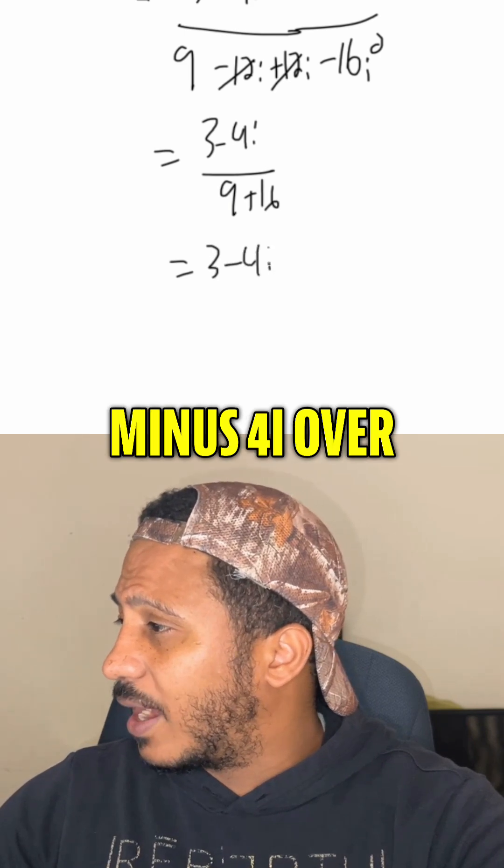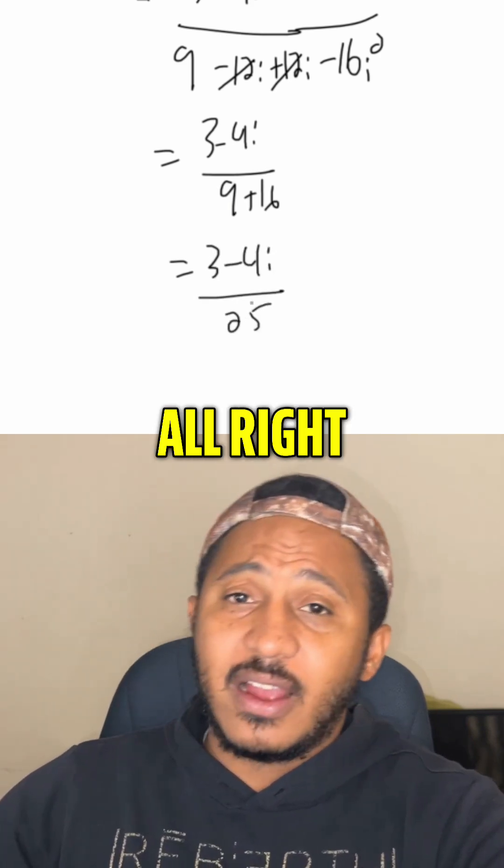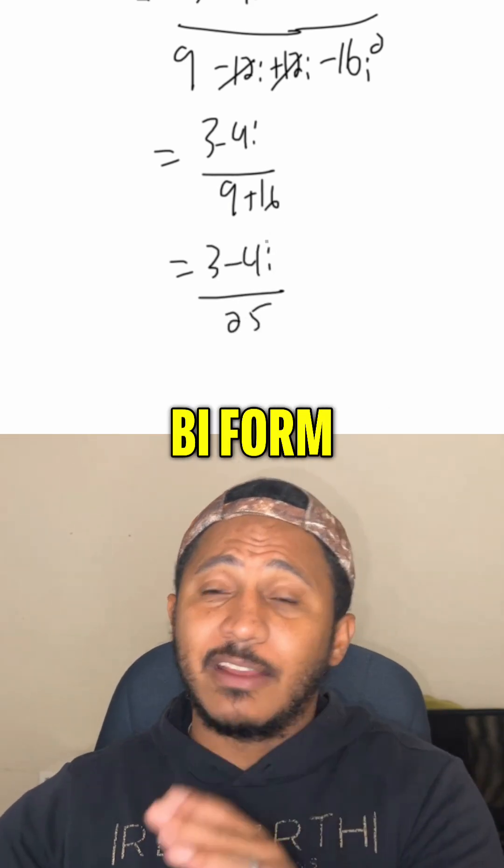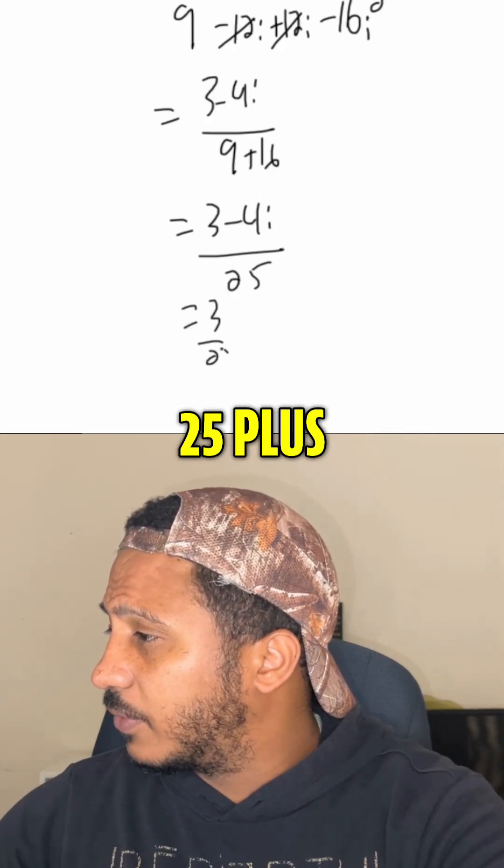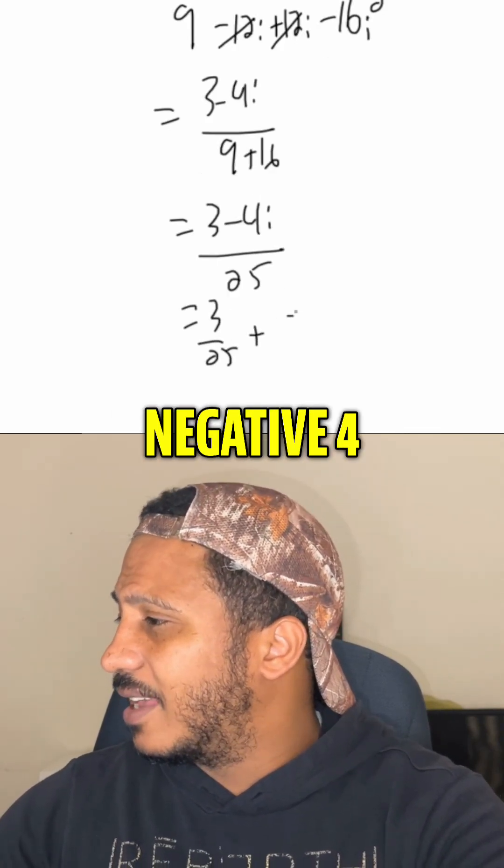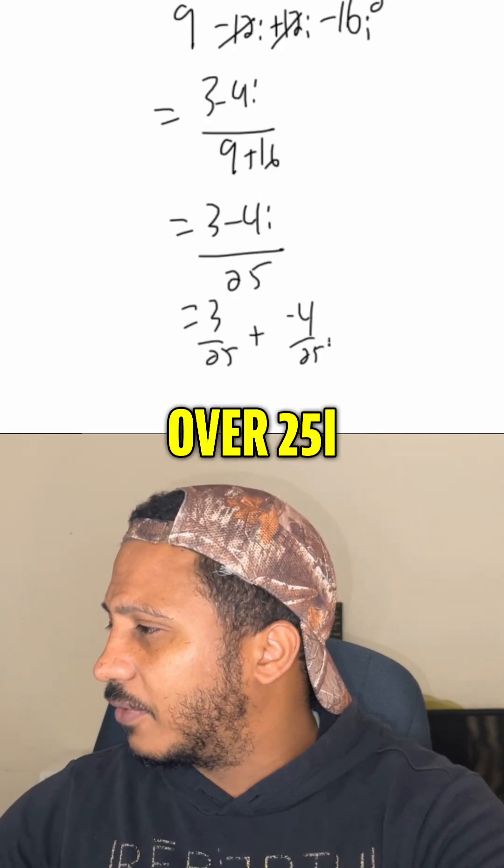So we get 3 minus 4i over 25. So our last part is to write in the a plus bi form, meaning we get this is 3 over 25 plus negative 4 over 25i.